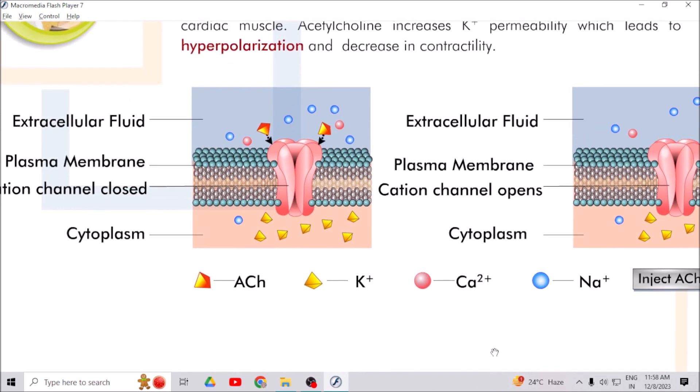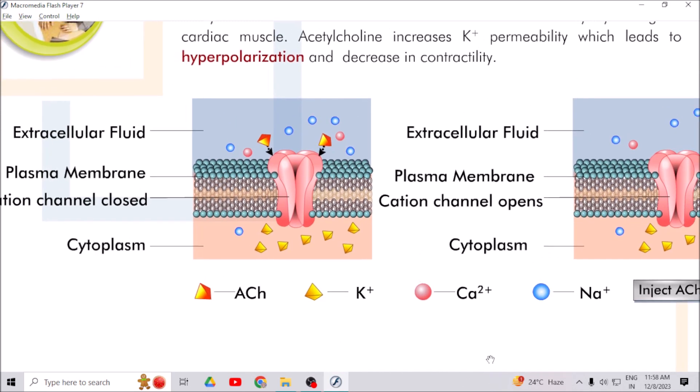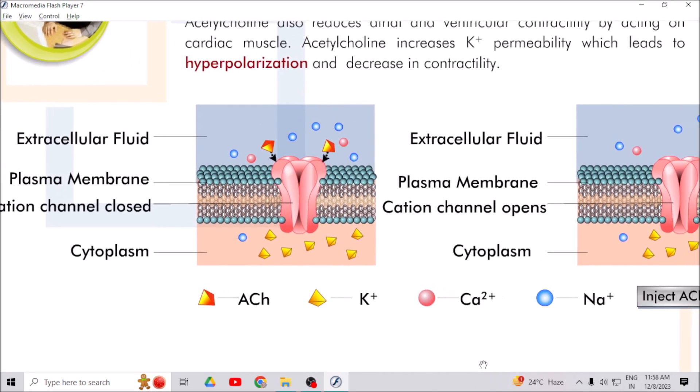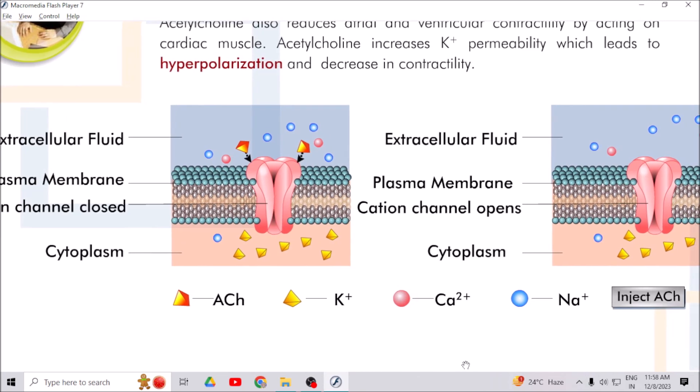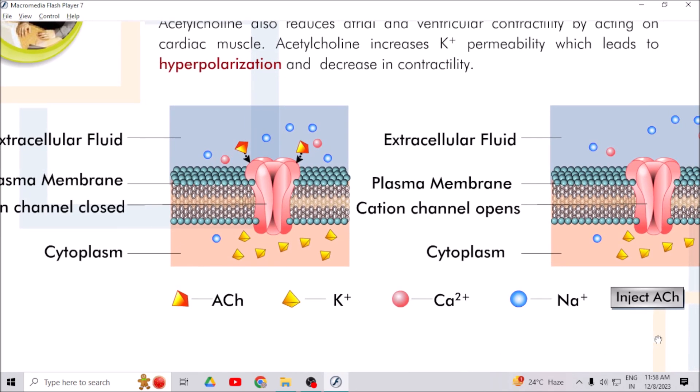Acetylcholine reduces force of contraction of cardiac muscle along with heart rate. By increasing permeability to potassium, acetylcholine hyperpolarizes cardiac muscle which leads to decrease in contractility.